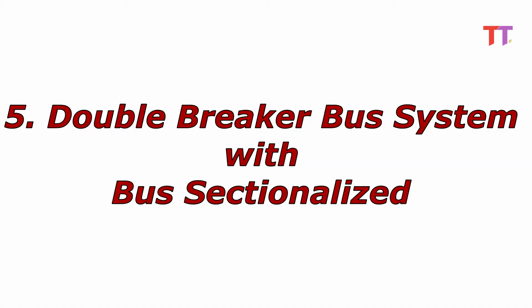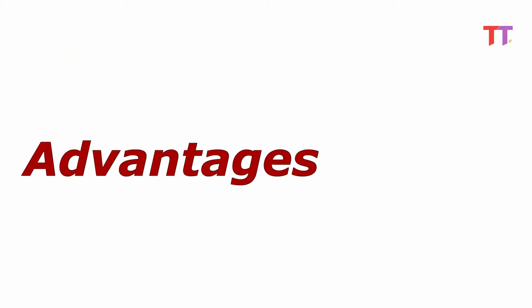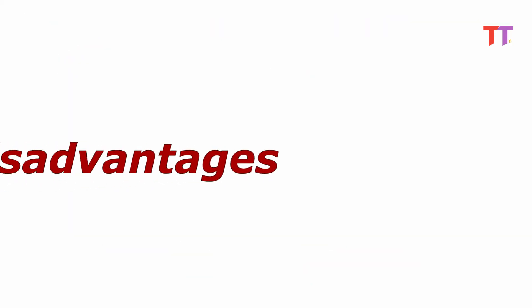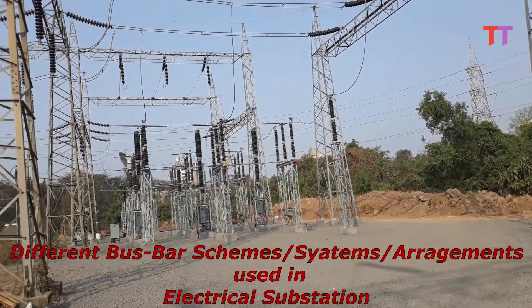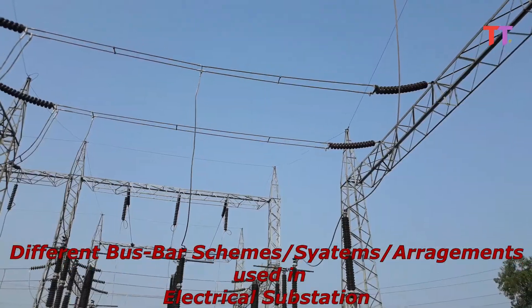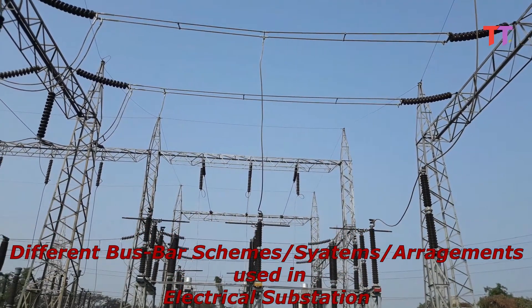5. Double breaker bus system with bus sectionalized. As the name says, this is nothing but the double breaker bus system with one bus sectionalized. Advantage: due to the sectionalized bus, flexibility and reliability of the system increases. Disadvantage: the sectionalized bus increases the cost and maintenance of the system. These are some of the bus bar systems used in electrical substation. The remaining bus bar systems are discussed in part 2 of this video — please click on the link for part 2.